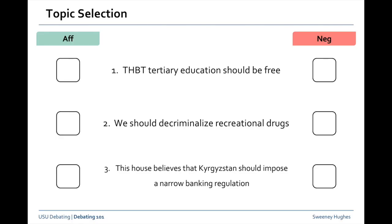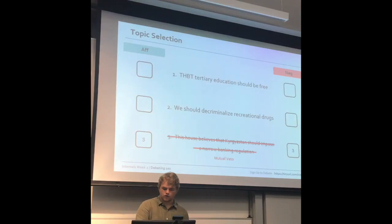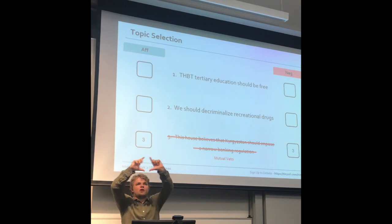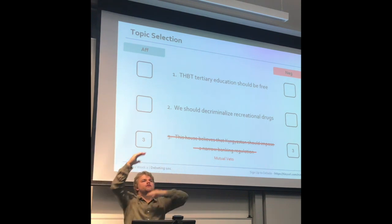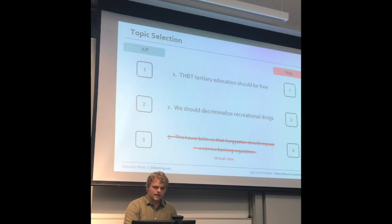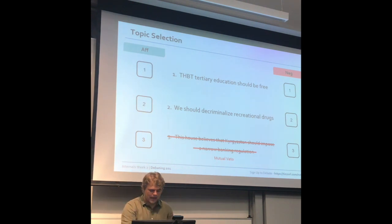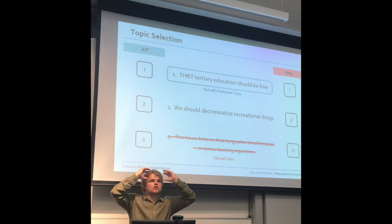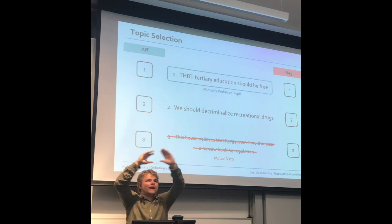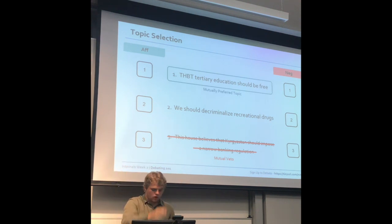In more complex circumstances — say 'we believe tertiary education should be free,' 'we decriminalise recreational drugs,' 'we believe Kyrgyzstan should implement narrow banking regulation' — probably both teams are vetoing the final motion. That means you've got a mutual veto and you're left with two topics that could potentially be debated. That is then resolved by how you've ranked them. If you've both ranked them the same, you do the one you've both ranked as number one.